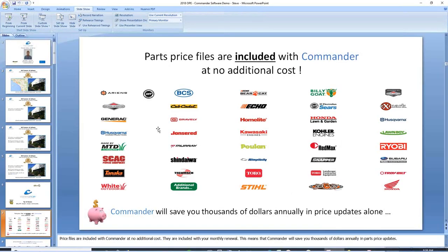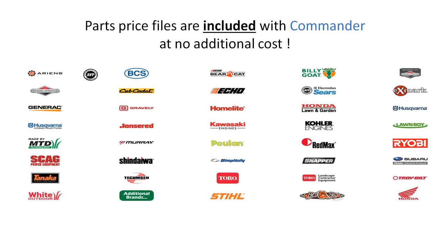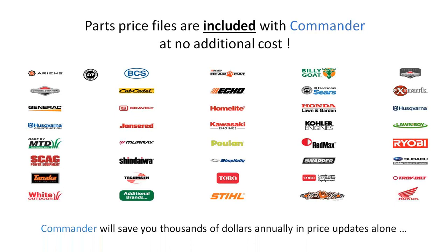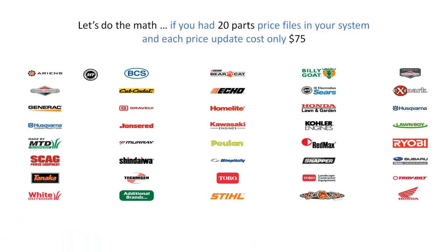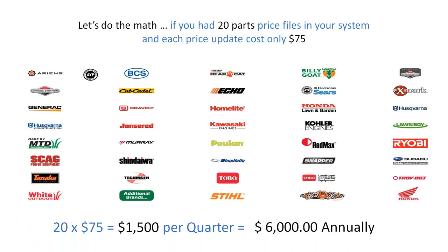For outdoor power equipment dealers, parts price files are included with Commander at no additional cost — a big difference from competitors. It's not uncommon for OPE dealers to have as many as 20 parts price files. Even if updates only cost $75 each, you'd be spending $1,500 per quarter on price updates, which is $6,000 a year just updating parts prices. Systems like C Systems, Ideal, and other competitors all charge for price books; with Commander the price books are included.